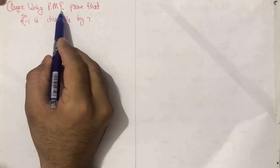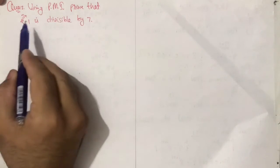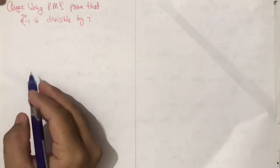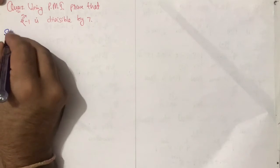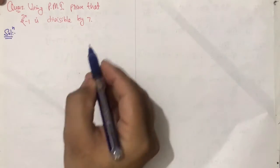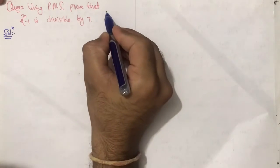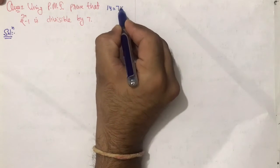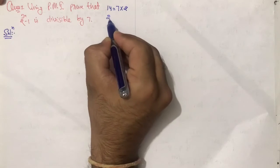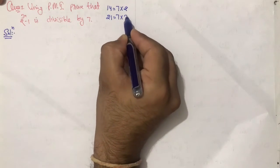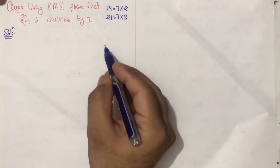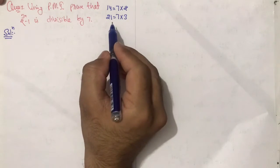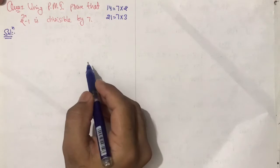Using the principle of mathematical induction, prove that 2 raised to power 3n minus 1 is divisible by 7. Solution: کوئی بھی number جو 7 سے divisible ہے، جیسے 14 کو لکھ سکتے ہیں 7 into 2، اور 21 کو 7 into 3۔ معنی لگ، کوئی بھی number جو 7 سے divisible ہے، آپ اس کو لکھ سکتے ہیں 7 multiplied by some integer.